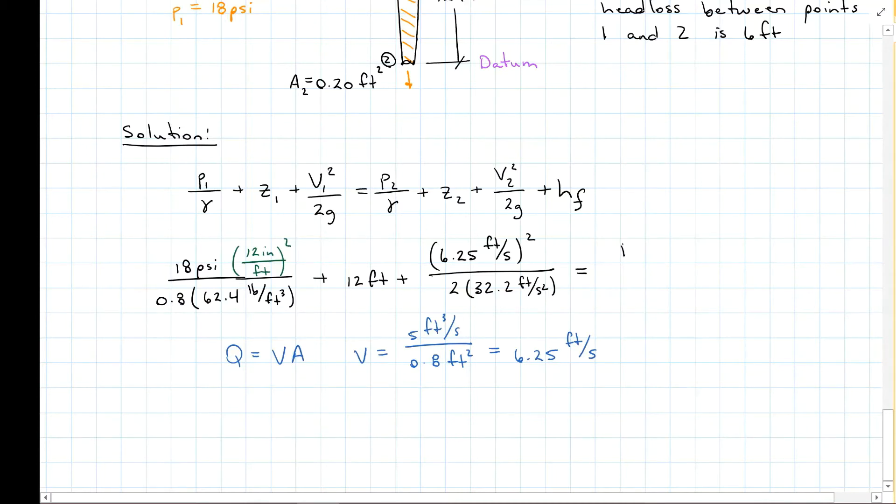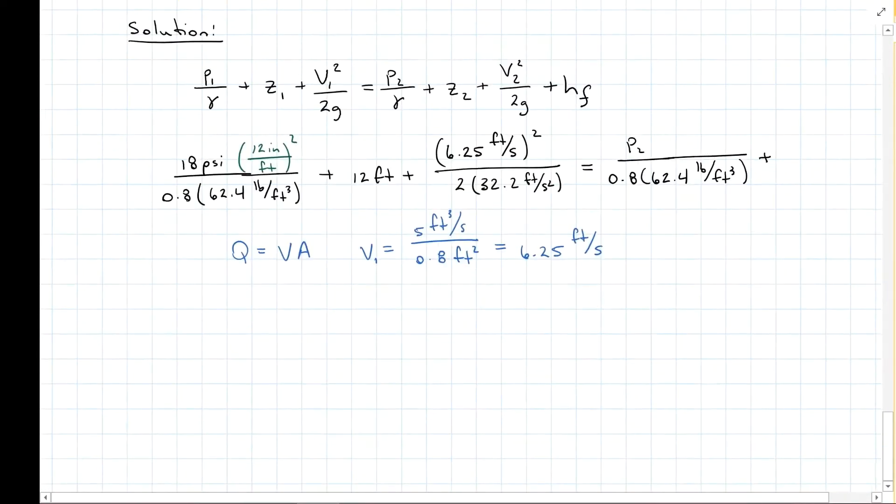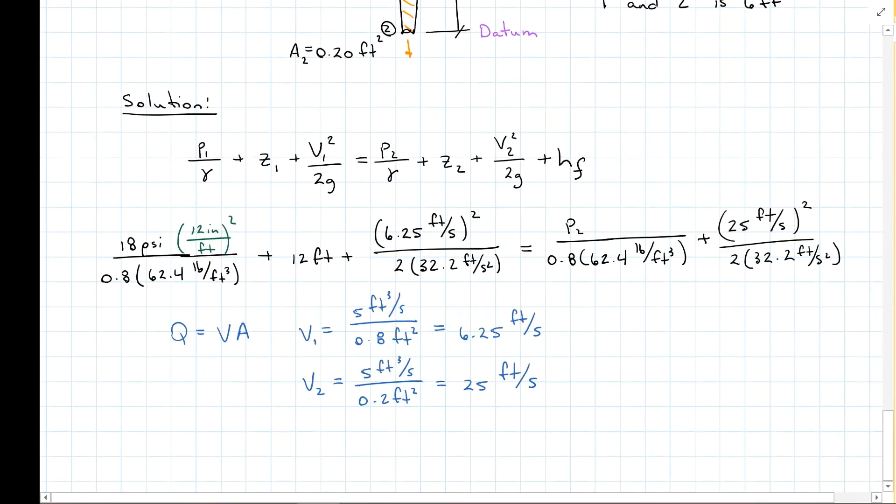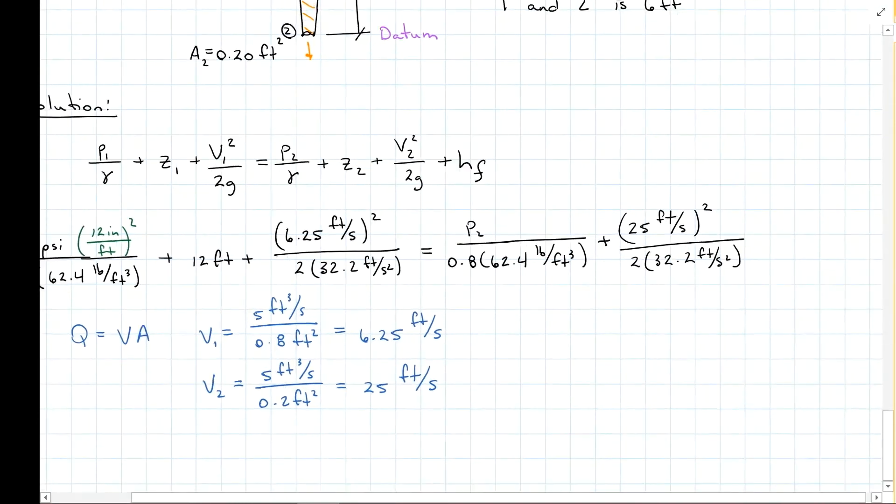This is equal to pressure 2. That's what we're looking for. This is still gasoline, so 0.8 times 62.4 pounds per foot cubed. Plus this is at our datum, so that's going to be 0. Flow rate is not going to change through the system, so we're going to be using our same equation here. But this time, we have a new cross-sectional area. So we have 25 feet per second.